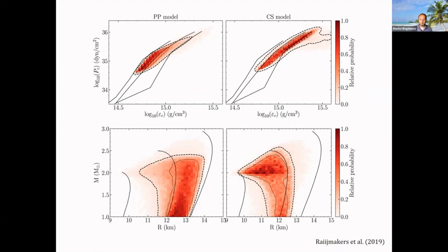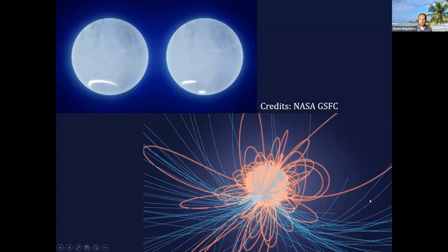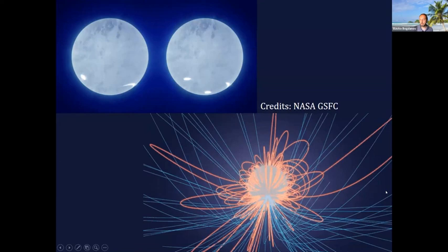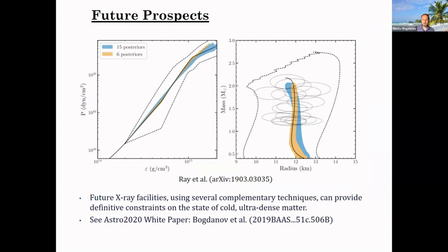Looking to the future: NICER will continue to observe these targets for the next few years. In the next generation of observatories, there are possibilities to get much better measurements and many more of them too. Several observatories are on the horizon where this can be accomplished. That's important for getting many more measurements but also for using multiple techniques to mitigate systematics. The future is bright in this field — I think we're just getting started.